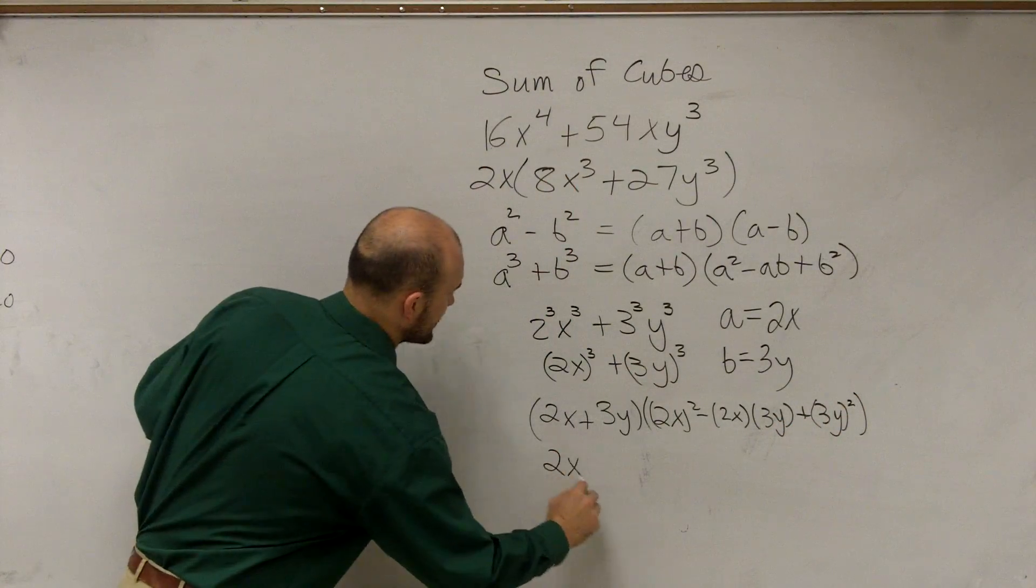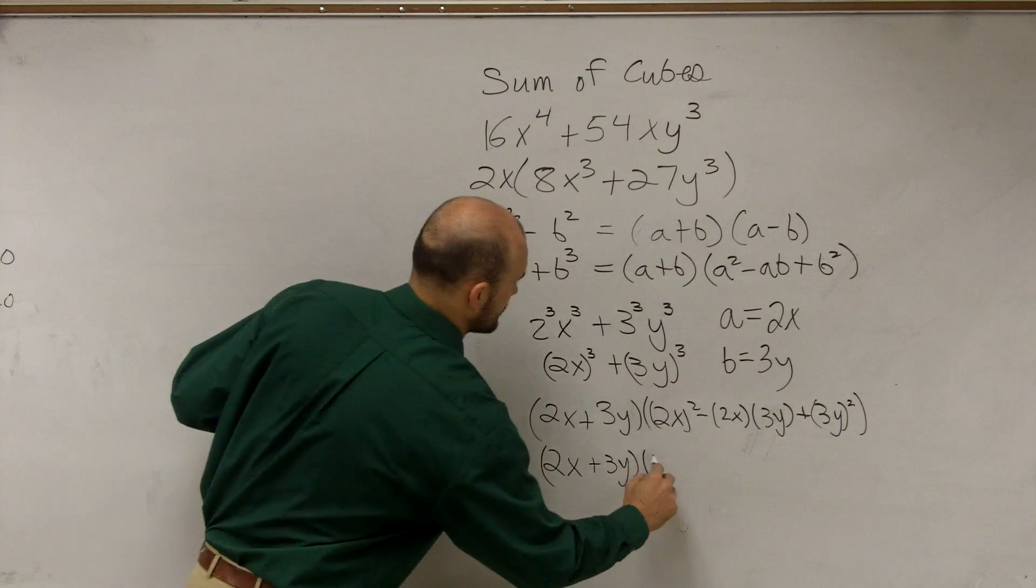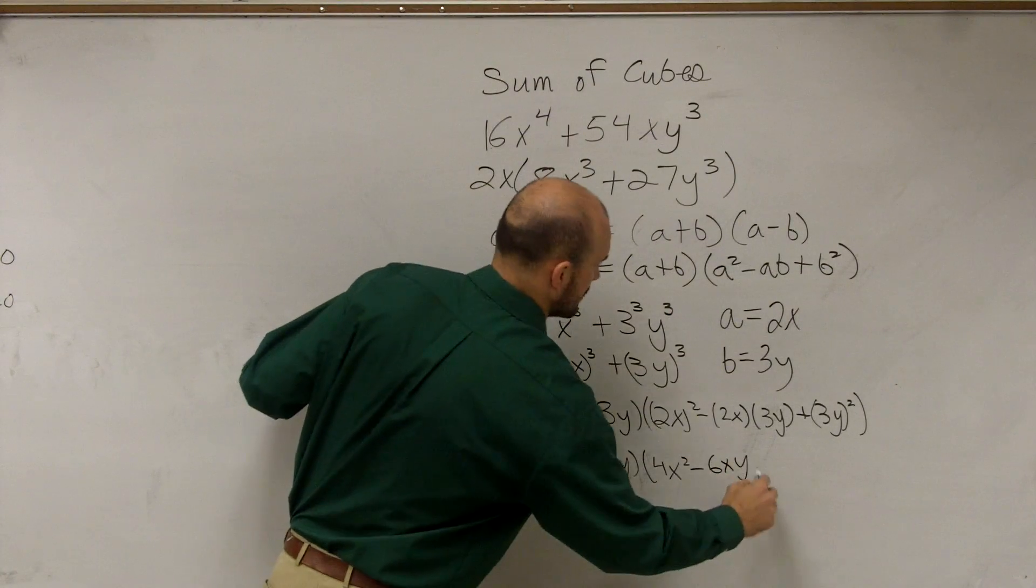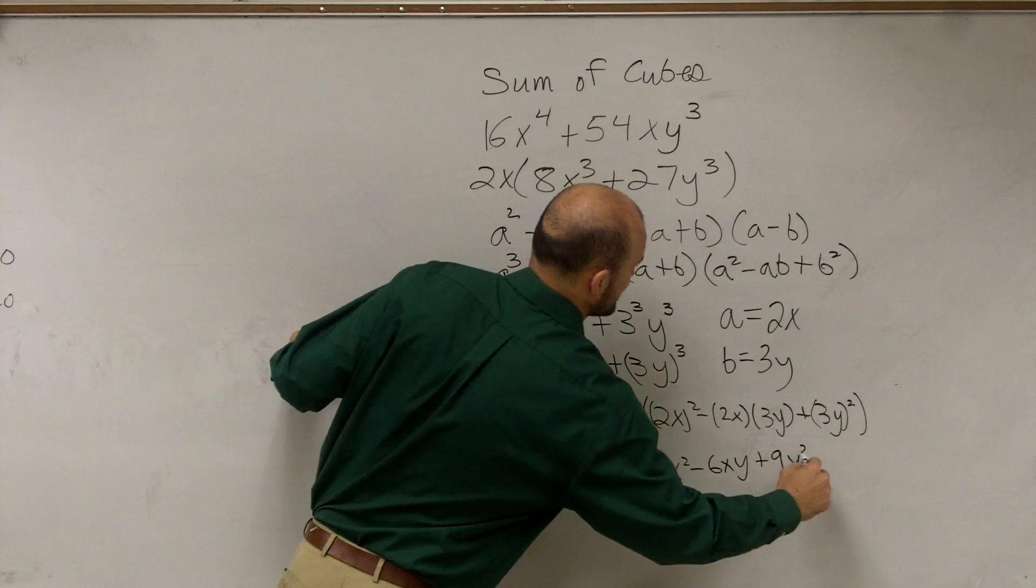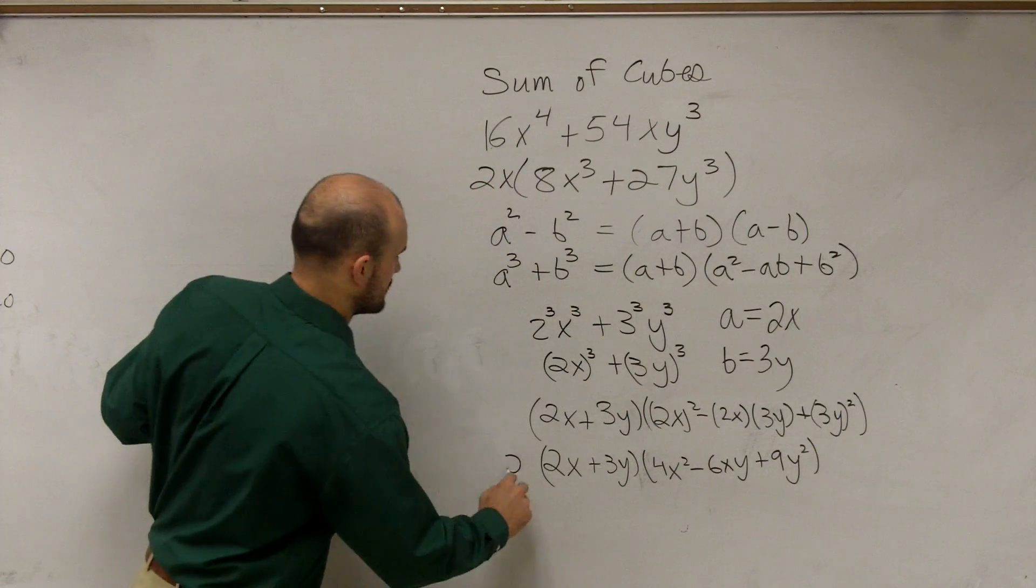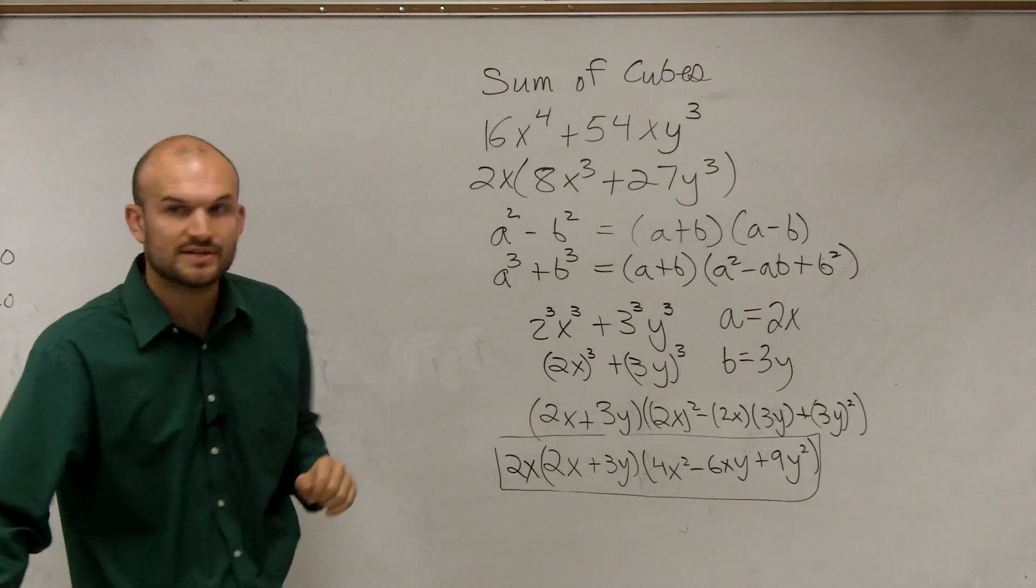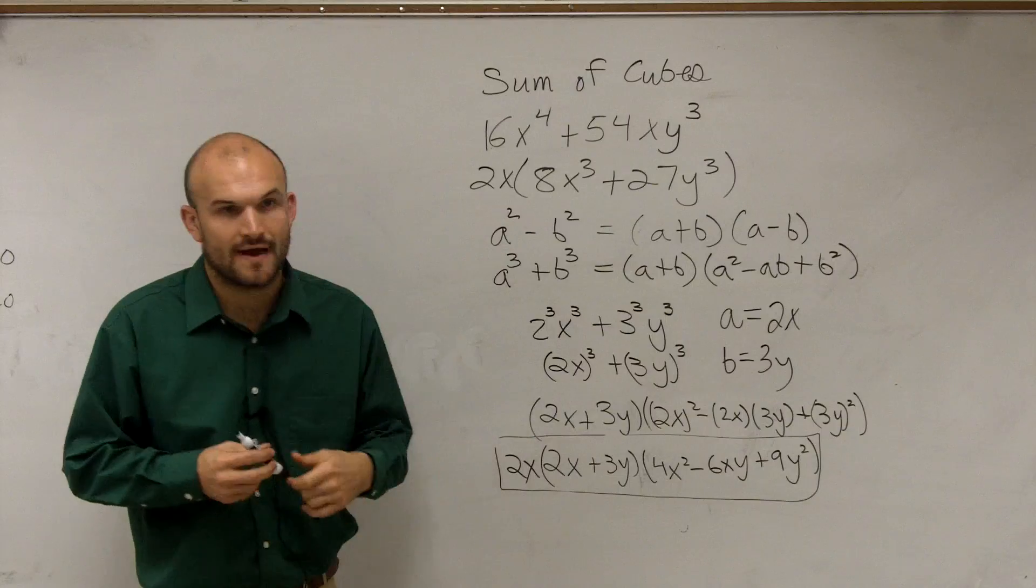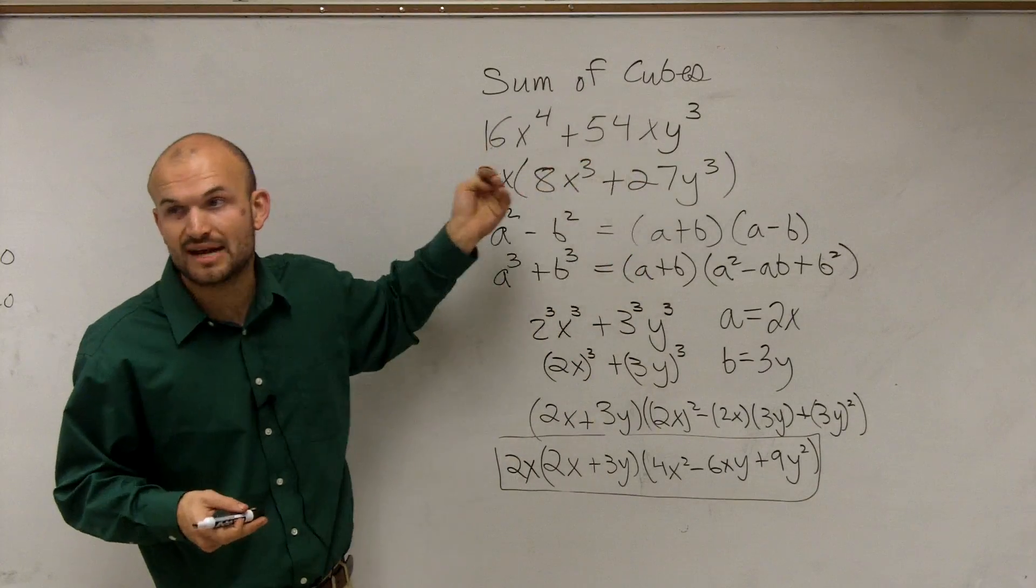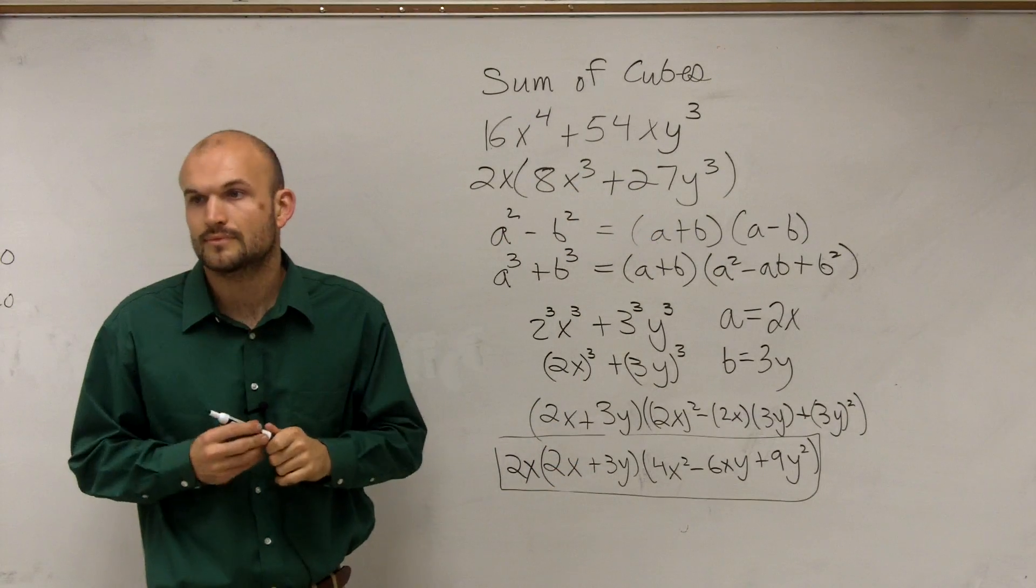So now let's simplify. So we get 2x plus 3y, times 4x squared, minus 6xy, plus 9y squared. And then remember, we initially factor out a 2x, so we'll write that back in there. So your final factored form of this problem is going to be that. So we can go an extra step. We found the GCF, factored it out, but since we had a sum of two cubes, we now factor that back up.